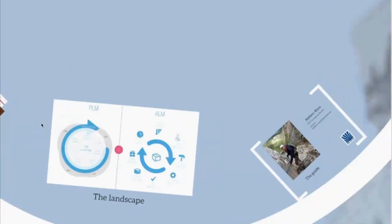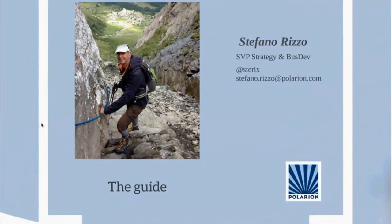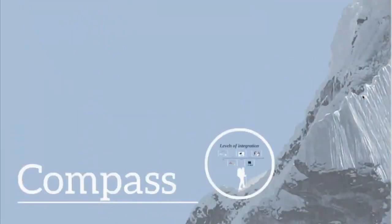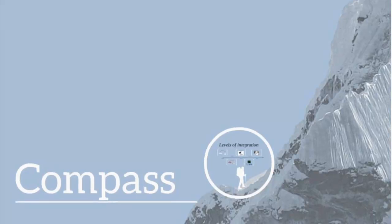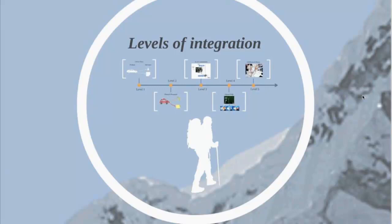In this landscape, I encourage you to follow me on Twitter and drop me an email any time during or after this presentation if you have specific questions. The direction that Polarion recommends talks about levels of integration. We've been talking with many of our customers in the ALM-plus-PLM space, in the system engineering space, in the mechatronics industry — where more than 50% of our customers are today — including automotive, aerospace, medical devices, and consumer electronics. We realized that there are different levels of integration between ALM and PLM, and each level is built on top of the achievements of the previous level.